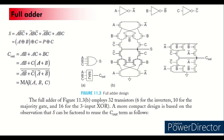This mirror CMOS implementation requires a total of 32 transistors to produce sum and carry-out. In VLSI design, our intention is to reduce the transistor count so that we can reduce the area required. So let us re-express sum in terms of C-out bar, as this implementation reduces the transistor count.